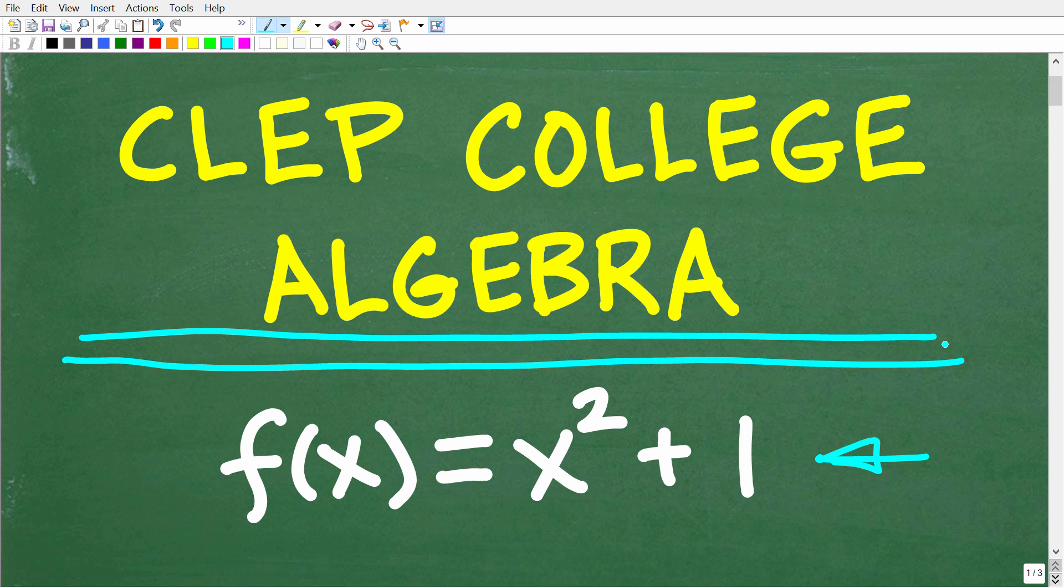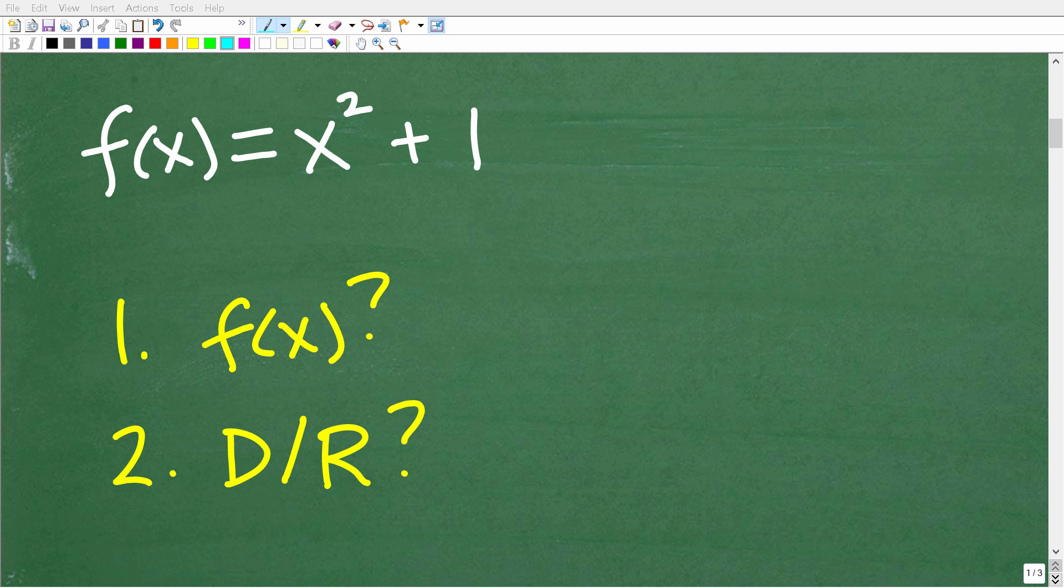So let's take a look at these two questions about this function right now. Once again, here is our function: f(x) = x² + 1. I actually have more than two questions here for you, but these are my two main questions. In CLEP College Algebra, you need to know a lot about functions.